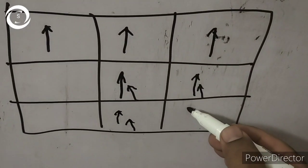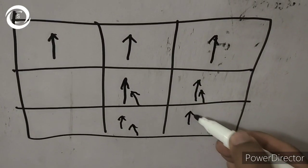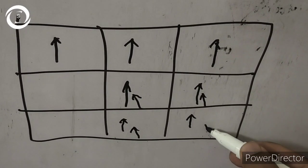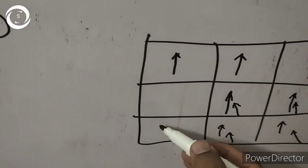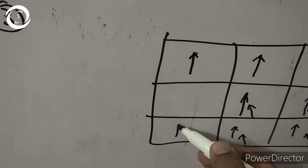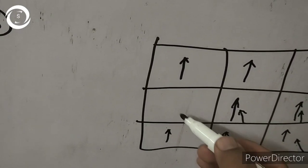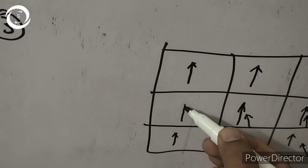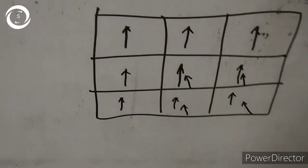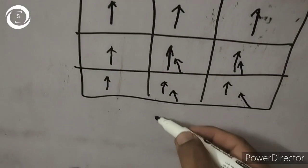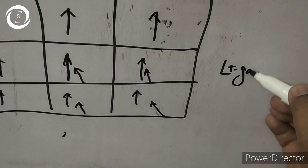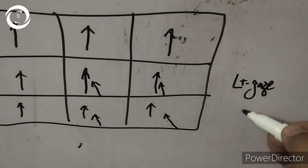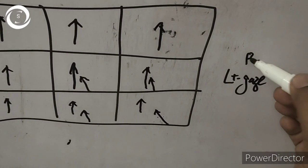So as we know that the right superior oblique function is to look in down and in gaze. So here this is a patient, this is diplopia charting of right superior oblique palsy because superior oblique will have limitation in the opposite gaze. Right superior oblique that will show you left down and in diplopia.